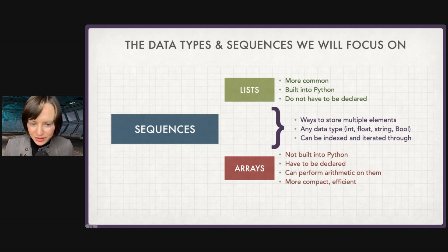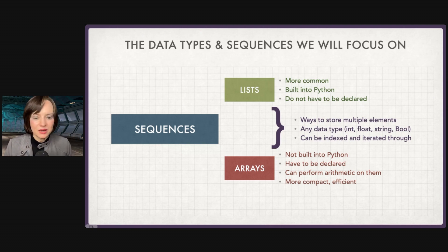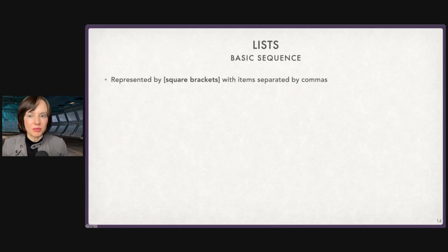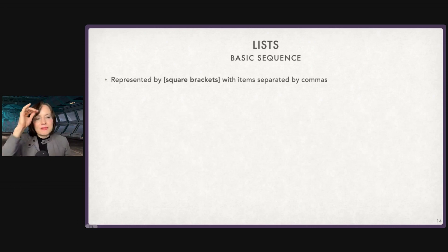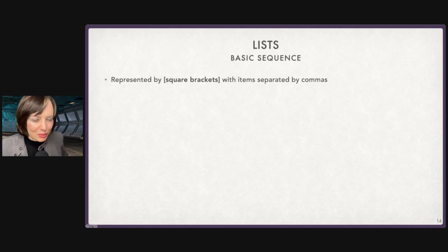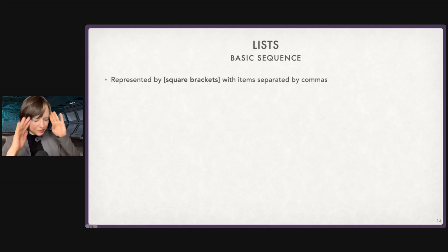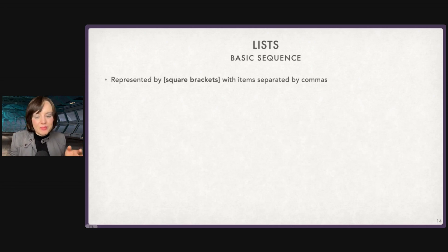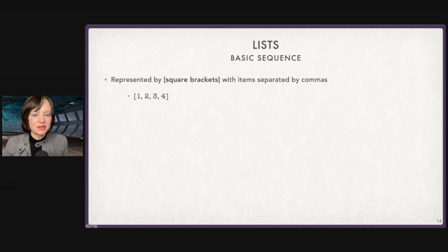Arrays offer better arithmetic functionality — I can perform operations in a way that makes more sense than with lists. They're also more compact and efficient, so if we're working with big sequences, we may want to use arrays. A basic list is represented by square brackets. The indexing of a list begins at zero, so the first element is in position zero, the second element is in position one.